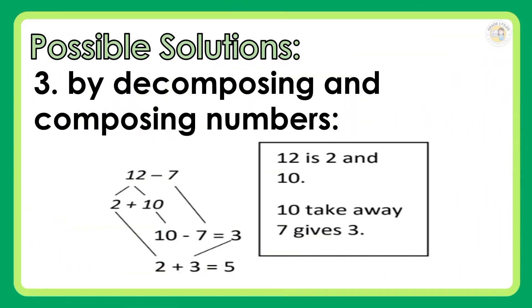Third, by decomposing and composing numbers: twelve is 2 and 10. Ten take away seven gives 3.